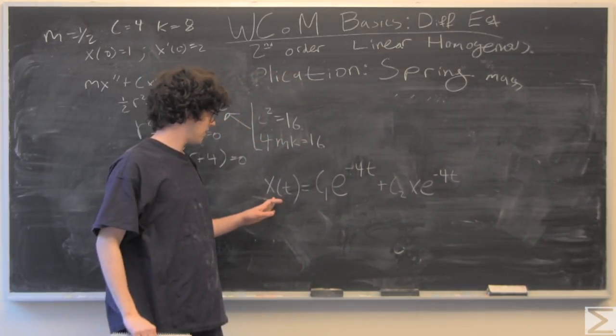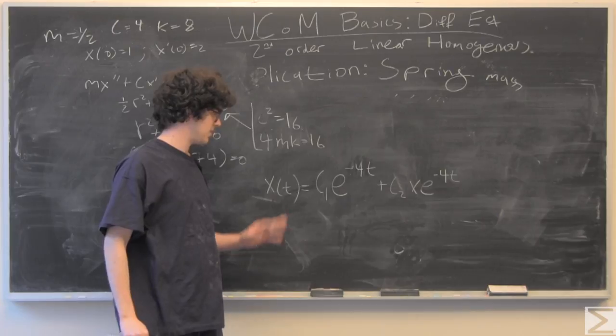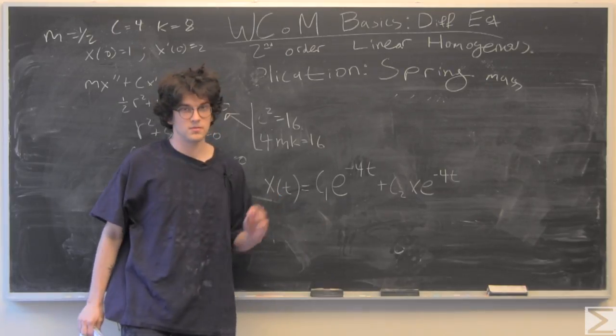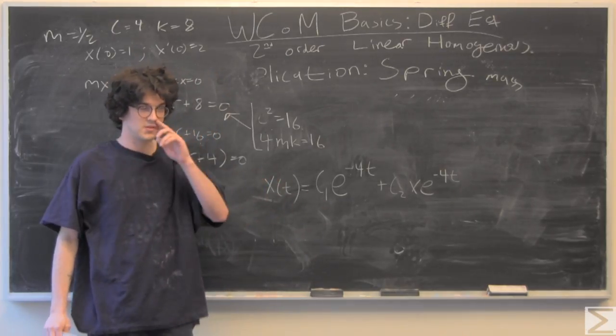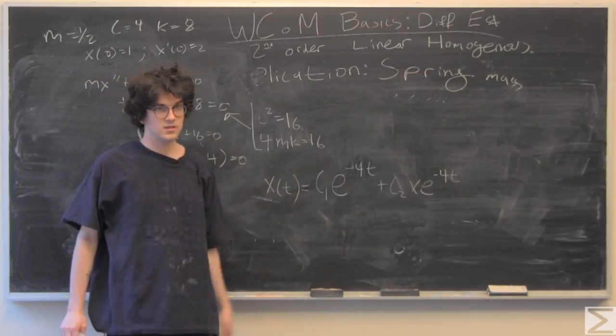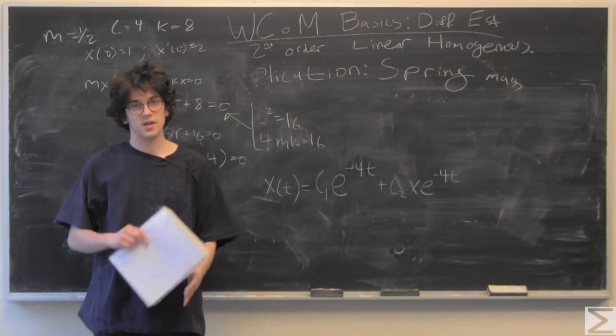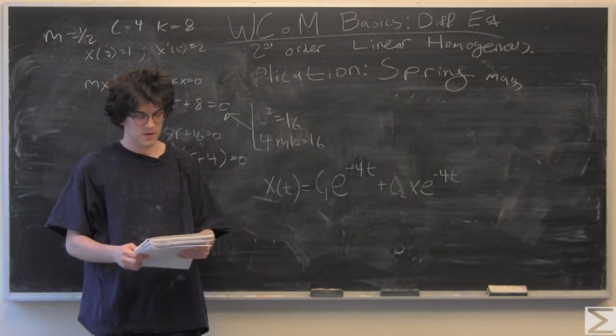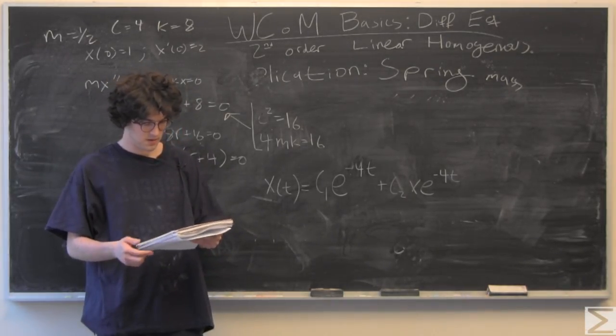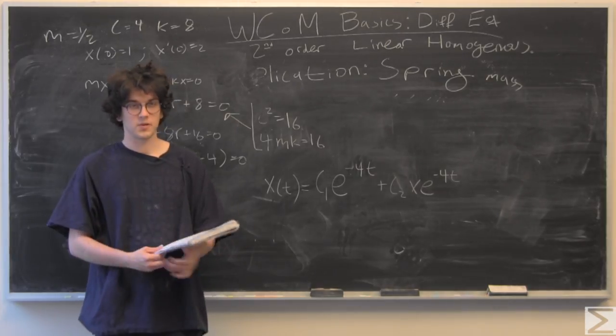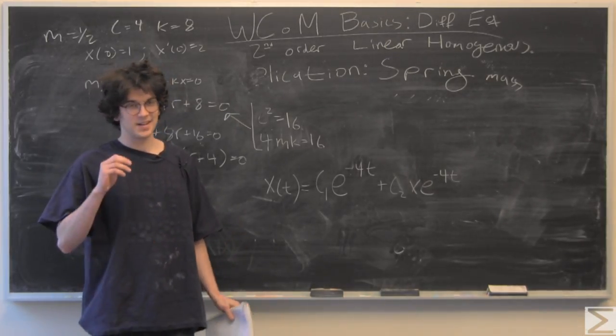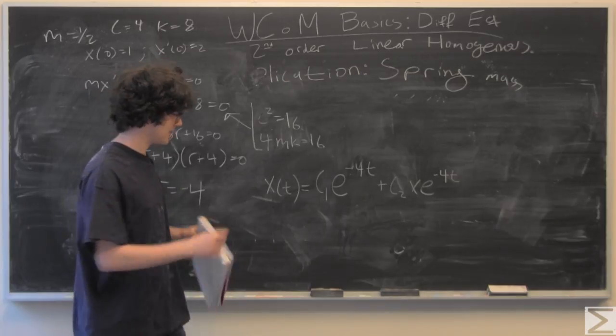If you just take the derivative of this and plug in x prime of 0, and plug in x of 0 directly into this, you can solve for c1 and c2. But I'll leave that to the viewer since that would take a fair amount of time. I would like to show you more examples about underdamped and overdamped cases.